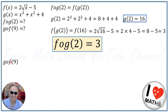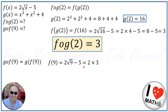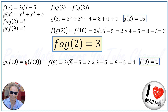We know that g∘f(9) means g of f(9), so first we calculate f(9). In f(x), we replace x with 9, giving us 2√(9−5). √9 = 3, so this becomes 2 times 3 minus 5, or 6 minus 5, which equals 1. So f(9) = 1.